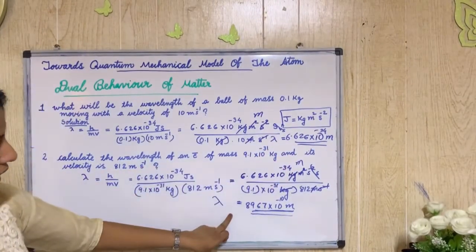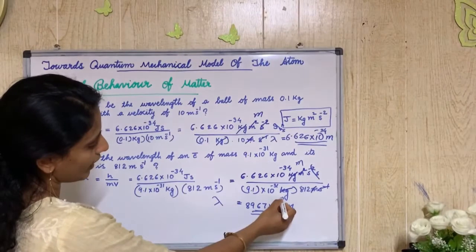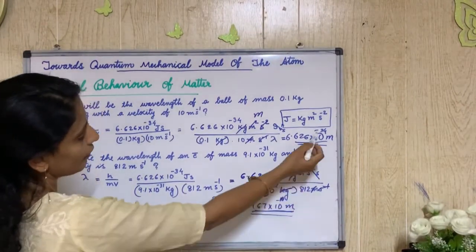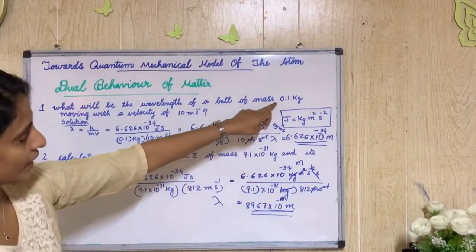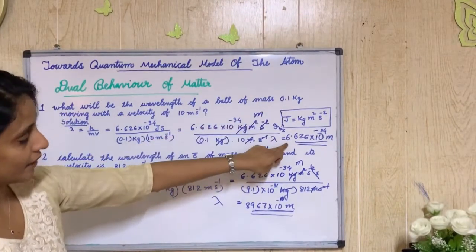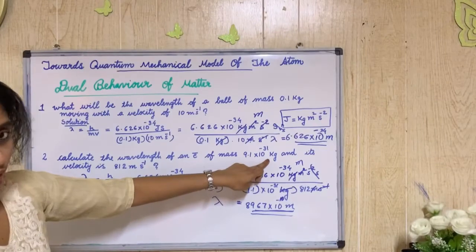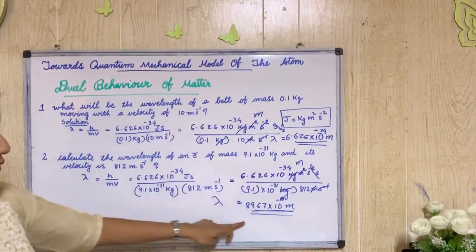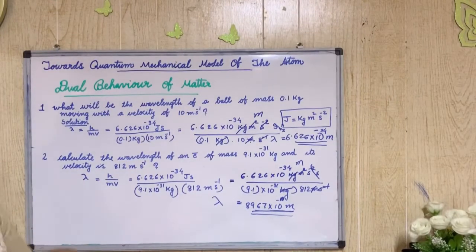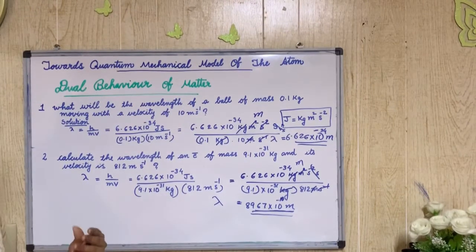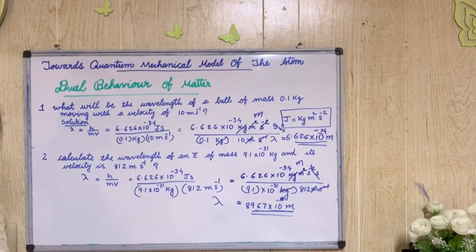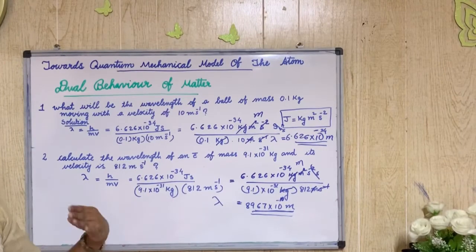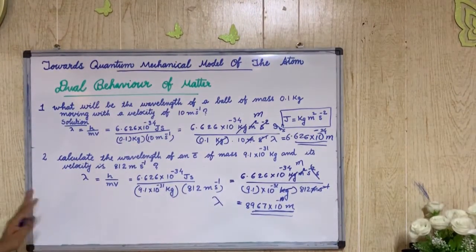Notice that the electron's wavelength (10⁻¹⁰ m) is vastly larger than the ball's wavelength (10⁻³⁴ m). This is because the electron has a much smaller mass. The wavelength of the ball is negligibly small — not even a significant fraction compared to the electron's wavelength — confirming that wave nature is only meaningful for microscopic particles.